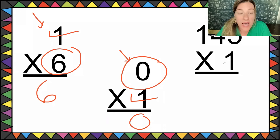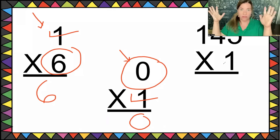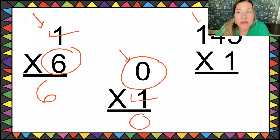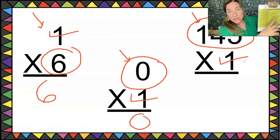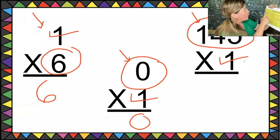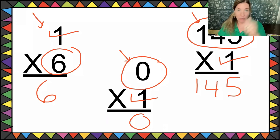Now we have 145 times one. This looks really scary, but this is a class for everyone — parents sit in and learn too. If I get to this problem, I ask myself, what rule am I going to use? I'm using my ones rule. 145 is my base number. My magical rules list says one times any base number equals the base number, so the answer is 145.